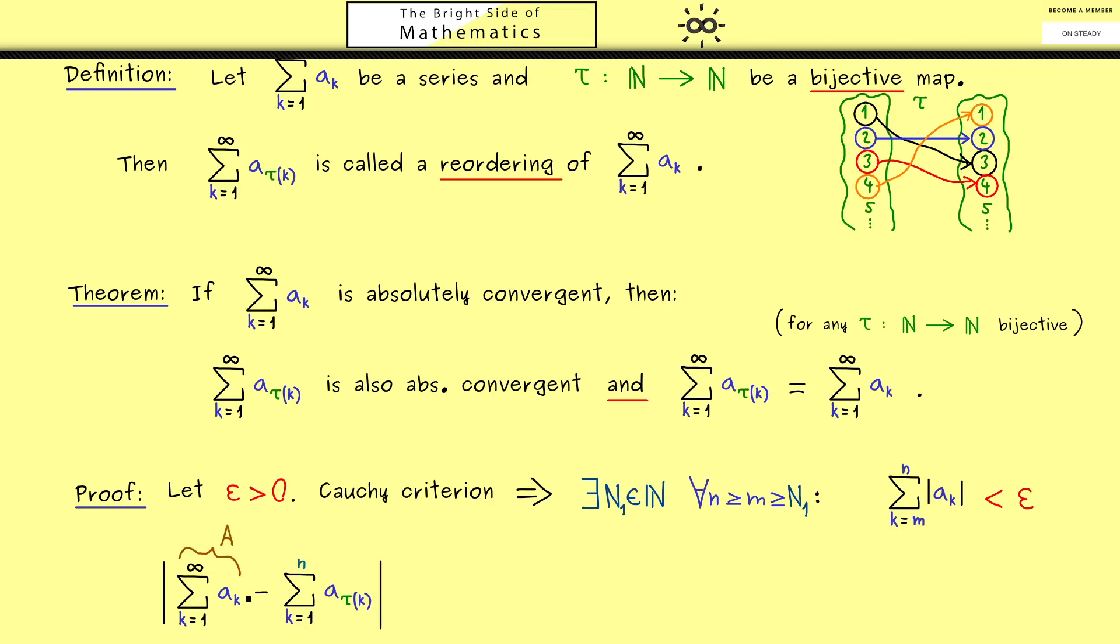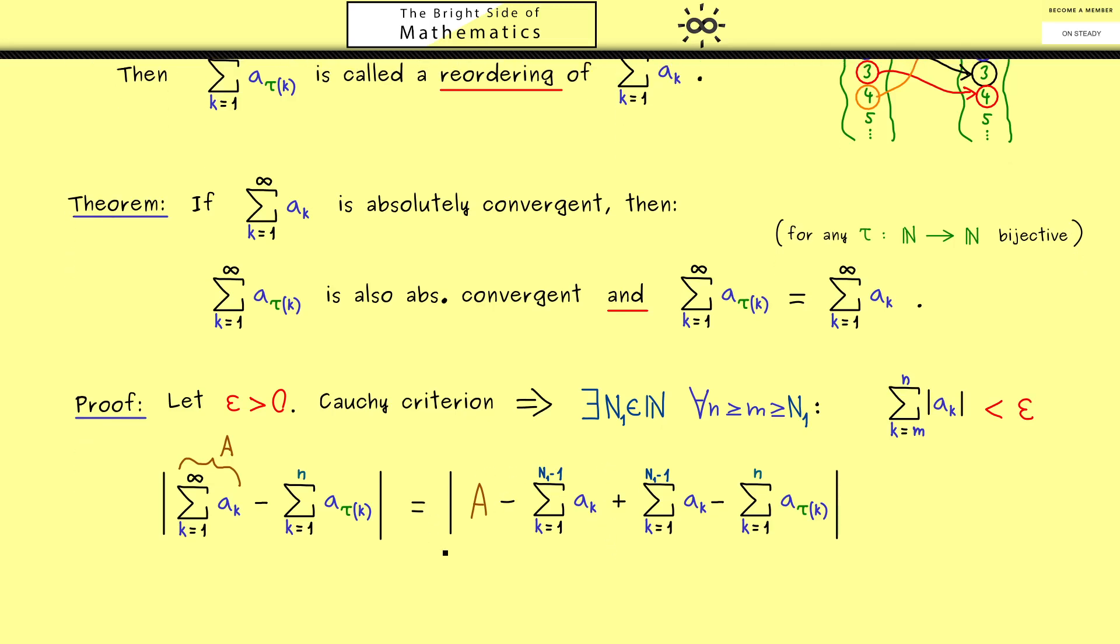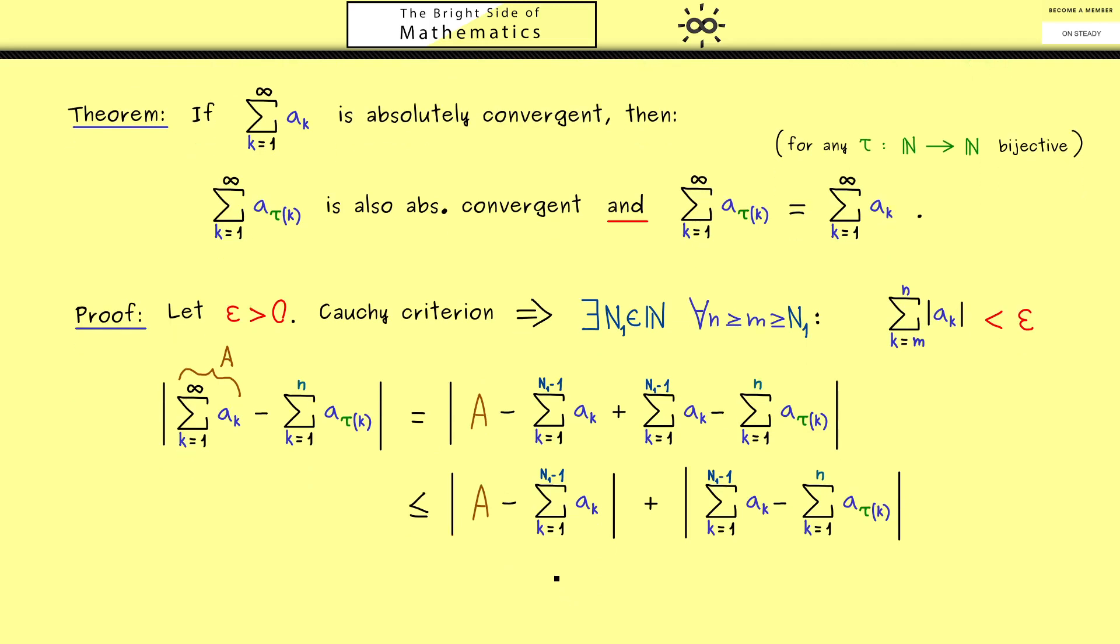Let's call this limit capital A. In the next step I want to bring in an expression we can control and use the triangle inequality. The term we use is the finite sum of ak where we start with 1 and go to N1-1. We do this because we already know by the Cauchy criterion that this term is close to A. The triangle inequality makes this less or equal than 2 terms.